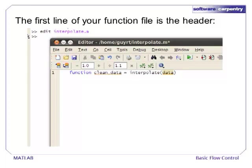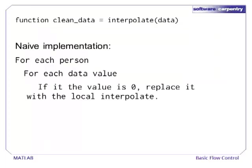For the rest of this lecture, we will be working in this editor. A naive implementation of interpolation will loop through each person and data value. We will test whether the value is 0, and if it is, we replace it with a local interpolation. This approach is not a data parallel way of thinking about problems involving matrices. It requires that we loop through every value of the matrix. Still, it is informative to write the naive version to make sure we understand what the program is doing.